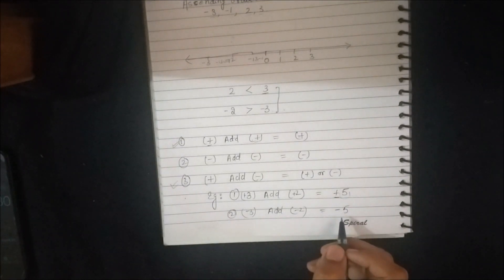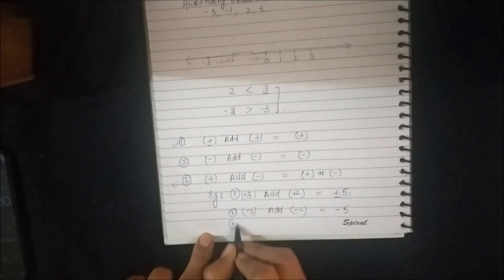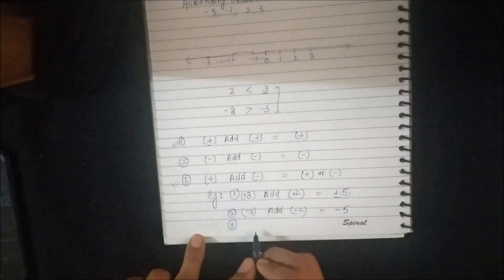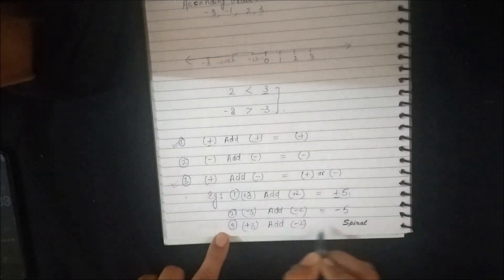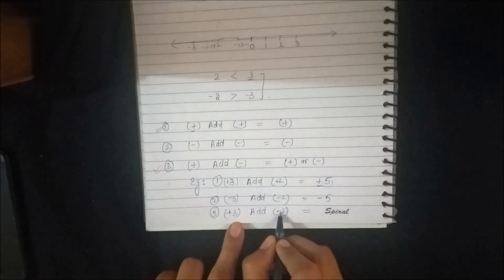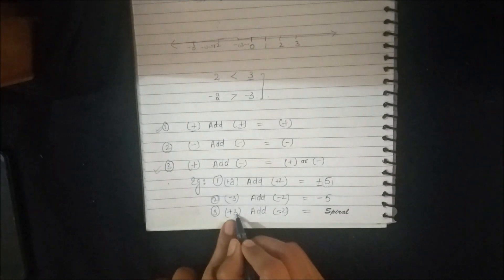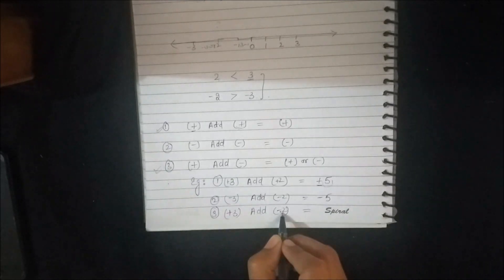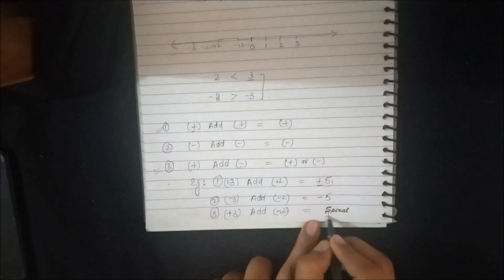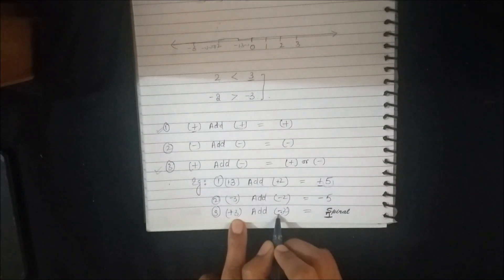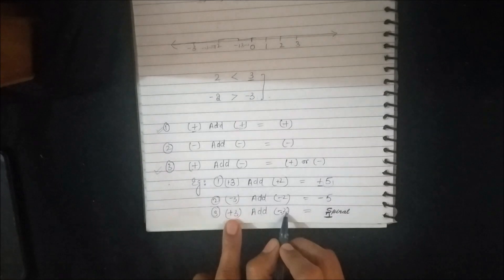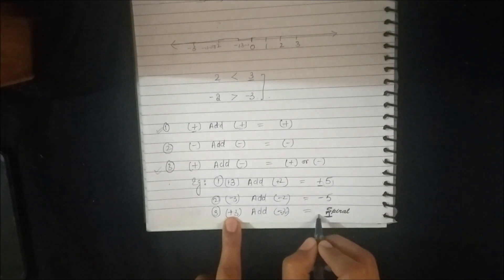If we add 1 positive and 1 negative integer — I am taking plus 3 and adding it to minus 2 — the answer will not be 5. They will not simply get added because one is positive and one is negative. Since 3 is the greater integer and carries a positive sign, the answer will also receive a positive sign, giving us plus 1.